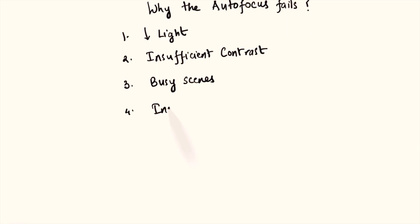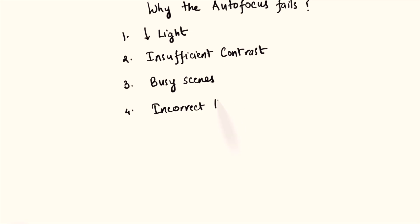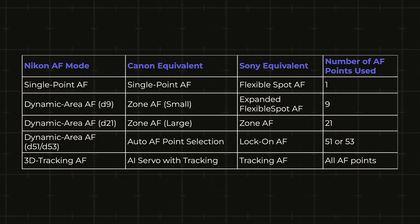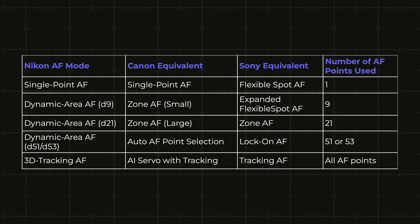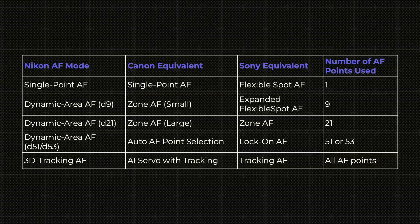Now that we have decided which messengers to engage with, we also get to decide how many messengers we need to get that focus. But remember, too many messengers may not always be a good thing — too many cooks spoil the broth. There will be some differences in terminologies and minor fluctuations in functionalities across camera brands, but by and large the underlying principle of how autofocus area modes work remains largely the same.